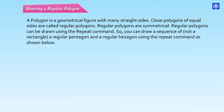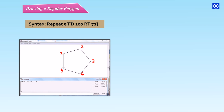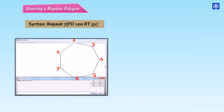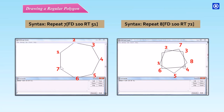Drawing a regular polygon: A polygon is a geometrical figure with many straight sides. Close polygons of equal sides are called regular polygons, which are symmetrical. Regular polygons can be drawn using the repeat command. For example: pentagon — Repeat 5 [FD100 RT72]; hexagon — Repeat 6 [FD100 RT60]; heptagon — Repeat 7 [FD100 RT51]; octagon — Repeat 8 [FD100 RT45].